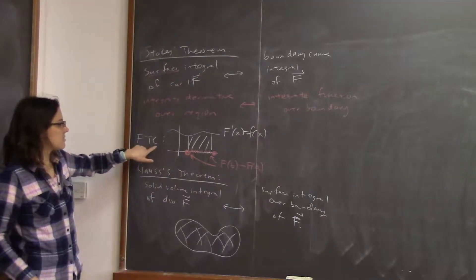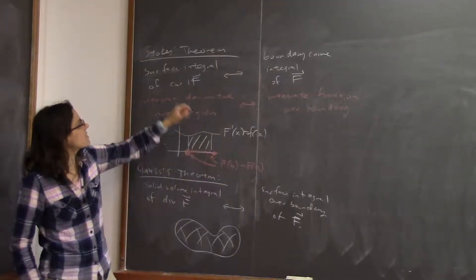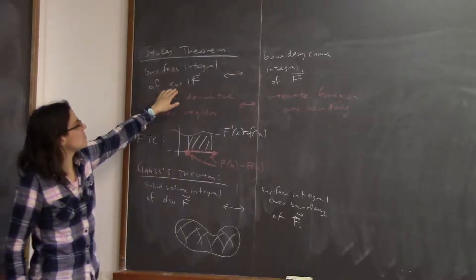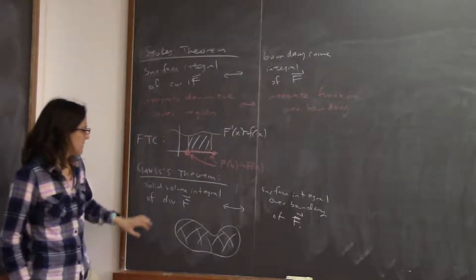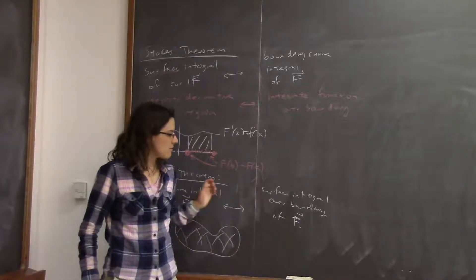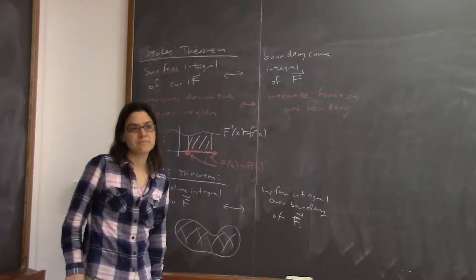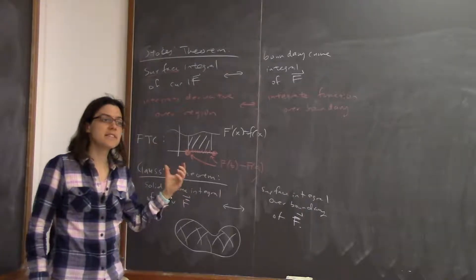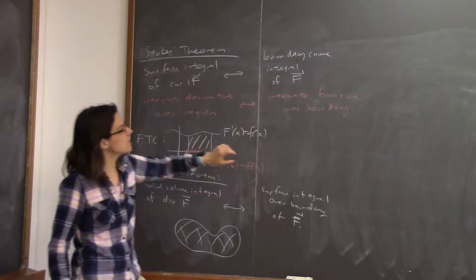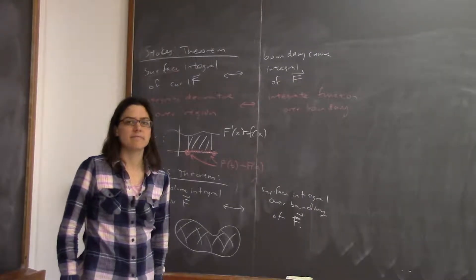The fundamental theorem of calculus relates one-dimensional things and zero-dimensional things. Stokes' theorem relates two-dimensional things and one-dimensional things. And Gauss's theorem relates three-dimensional things and two-dimensional things. But they're all the same idea: you're integrating the derivative over some region, which is the same as integrating the function itself over its boundary.